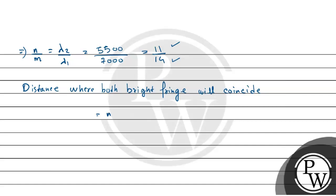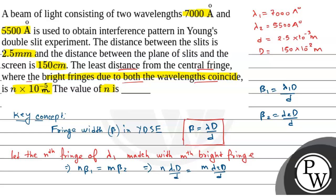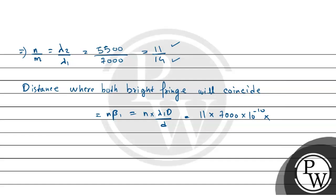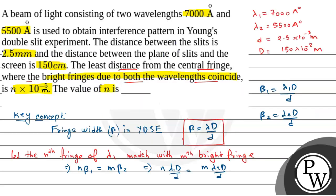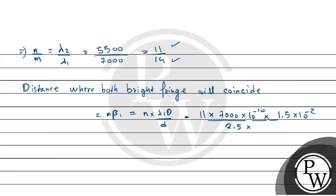The distance from the central fringe is y = n × β1 = n × λ1·D/d. Substituting: y = 11 × 7000 × 10⁻¹⁰ × 1.5 / (2.5 × 10⁻³). Calculating this gives y = 462 × 10⁻⁵ meters.